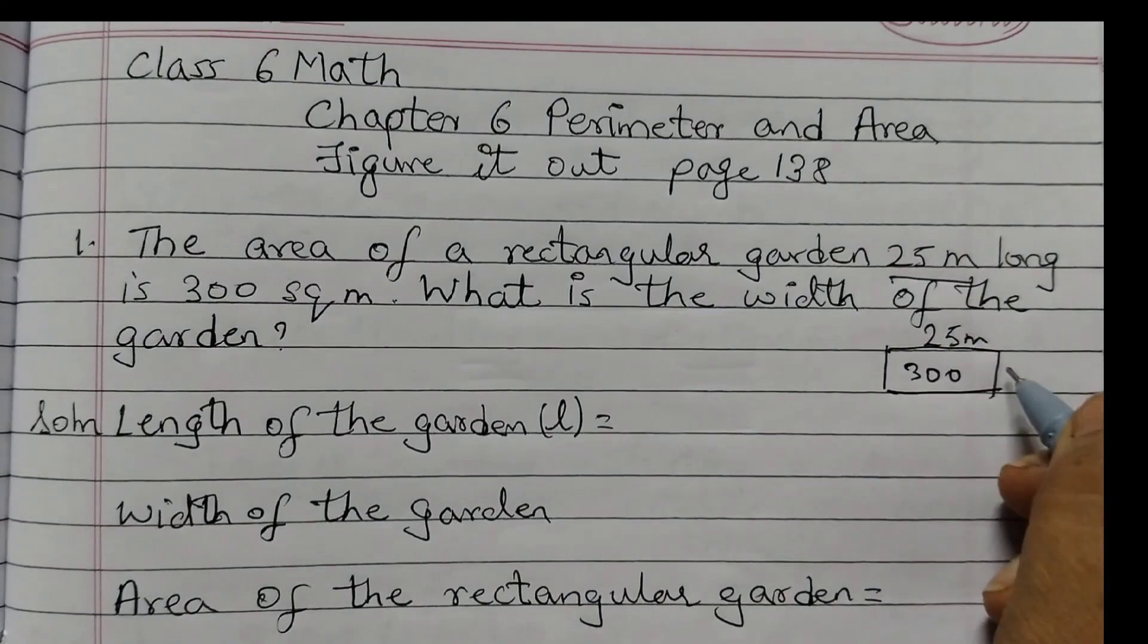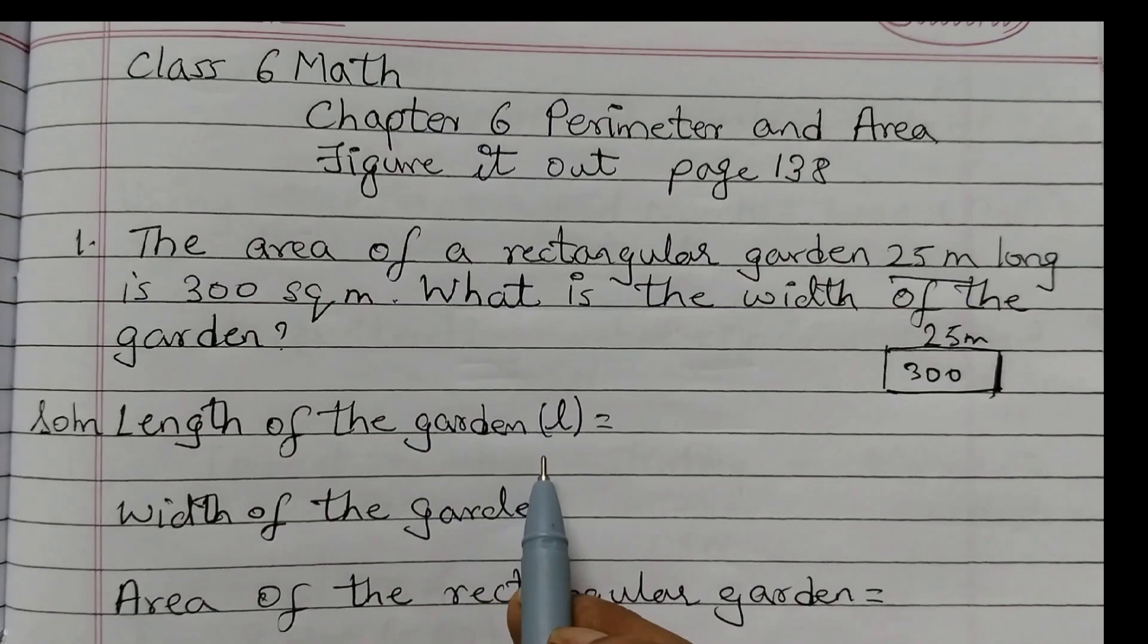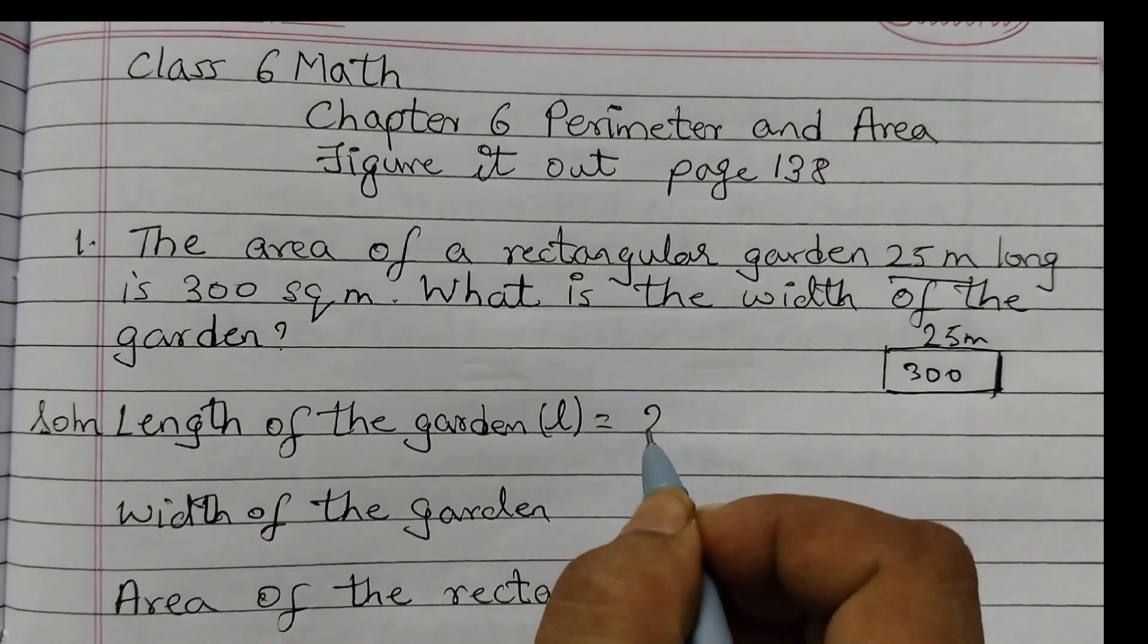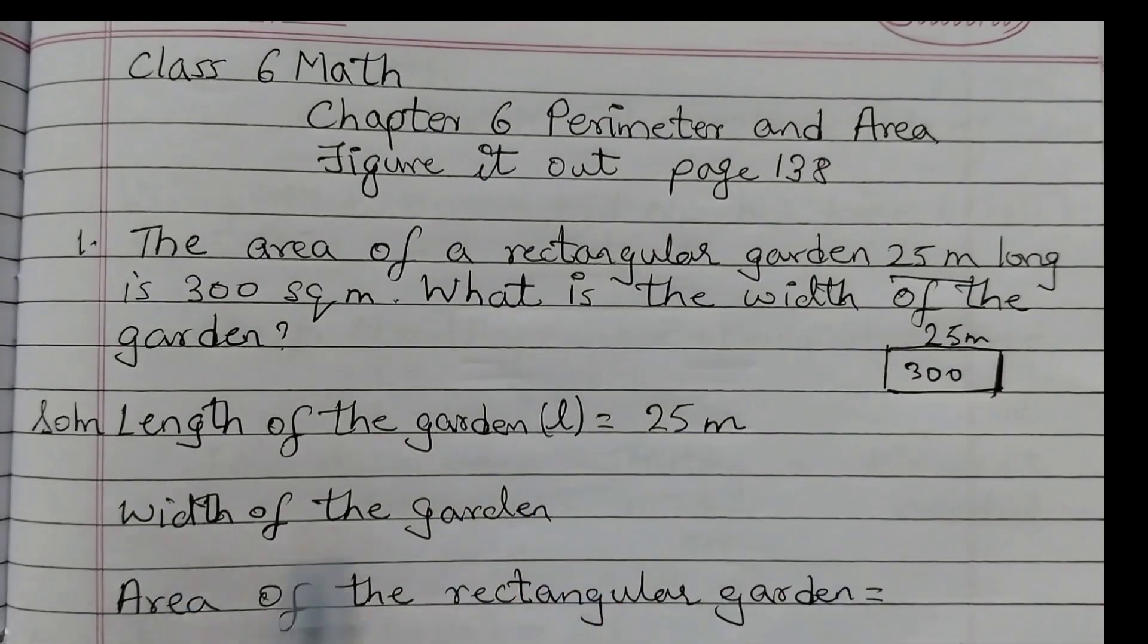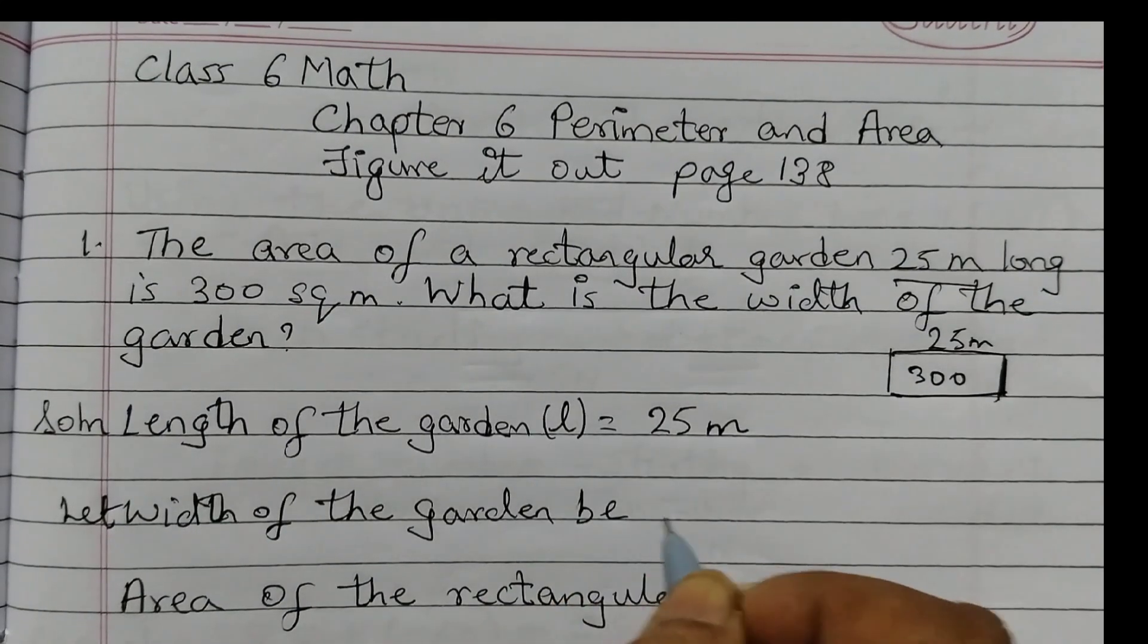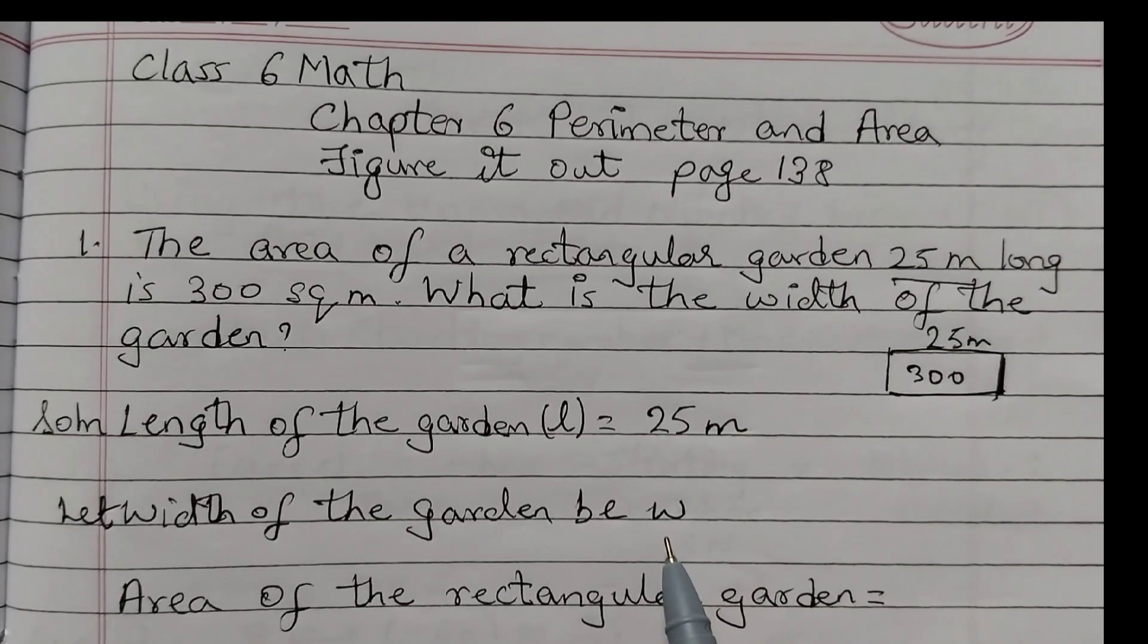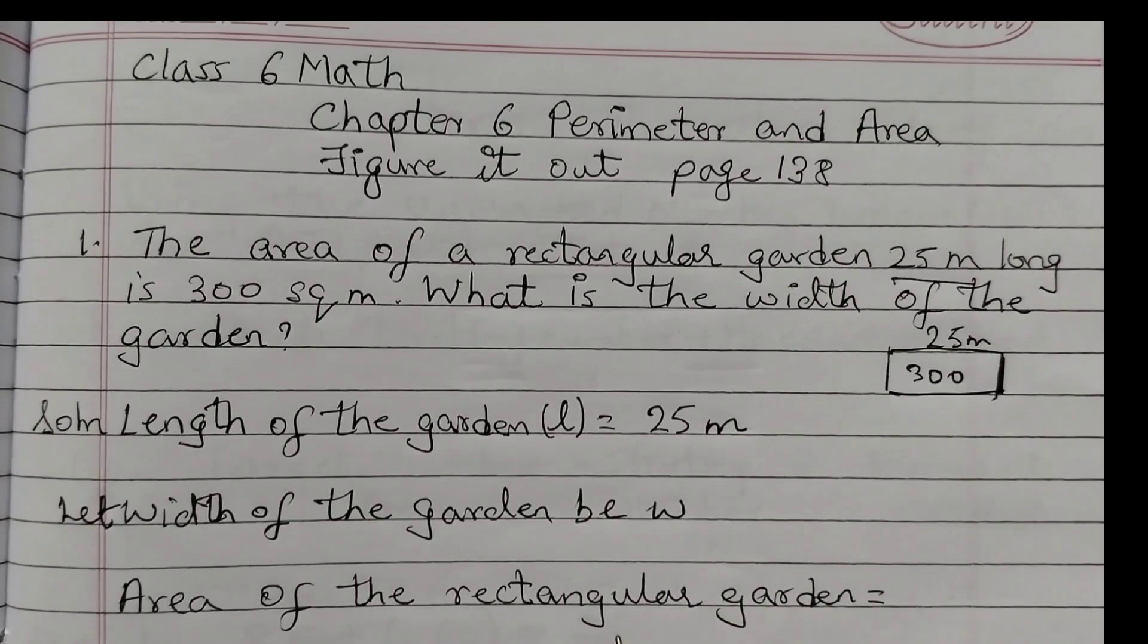We need to find out the width of the garden, this length we need to find out. So length of the garden, let it be L, which is 25 meters. And let width of the garden be W. Length is L and width is W because we don't know the width; we need to find it out.